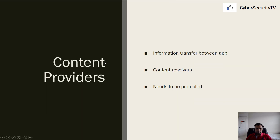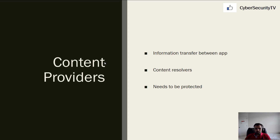Next, we're going to look at content providers. A content provider allows you to transfer information between apps. For example, if Instagram wants to collect some information from Gmail, or Facebook wants to get information from Instagram, Facebook has to request that information. Instagram then has to authorize that request — for example, allowing Facebook to retrieve your profile information. That communication works through content providers.